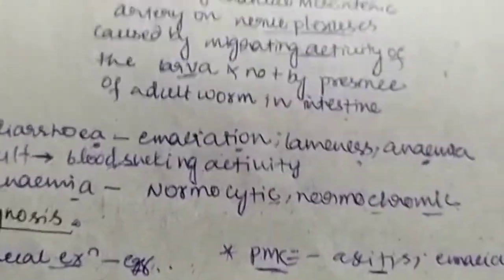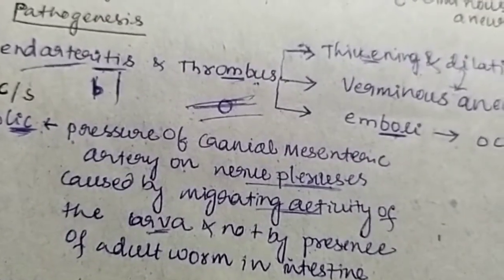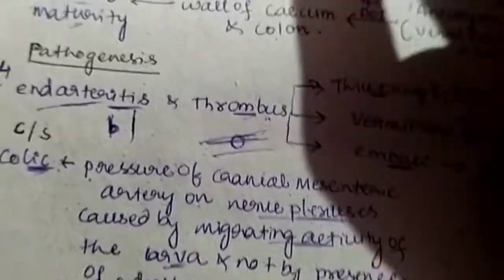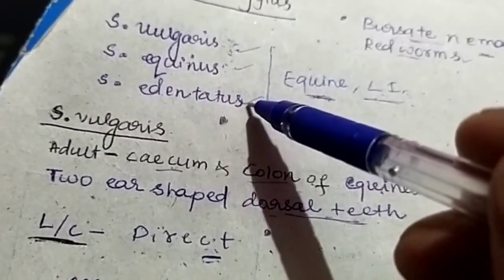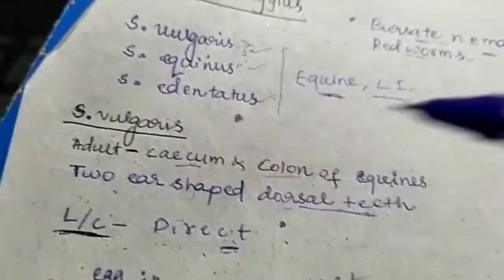This is about the species Strongylus vulgaris. The remaining species, Strongylus equinus and Strongylus edentatus, we will see in the next video. Thank you.